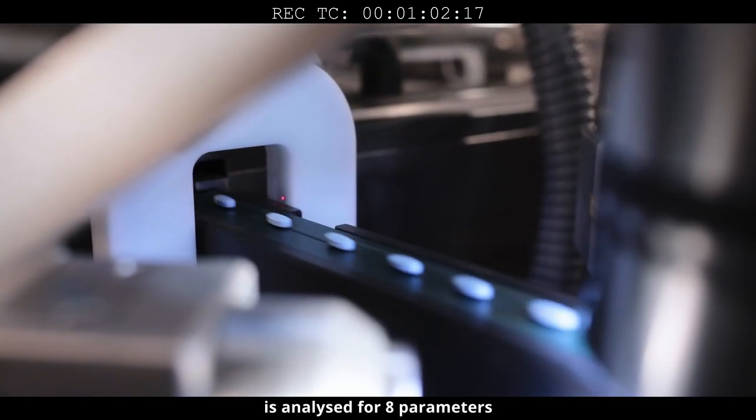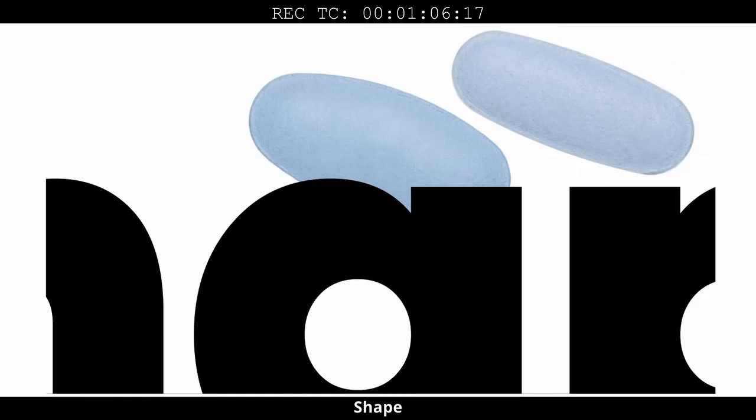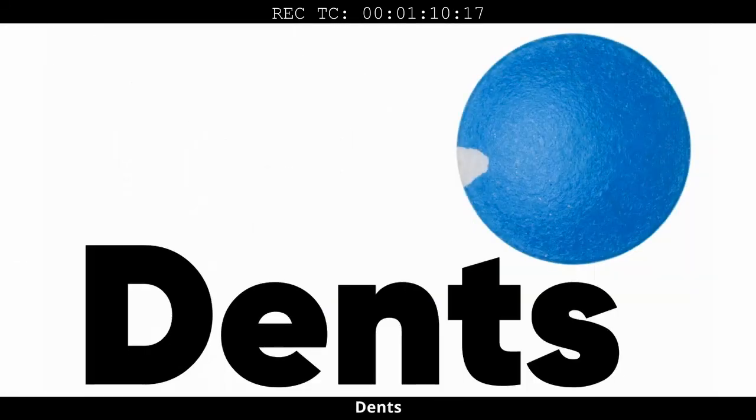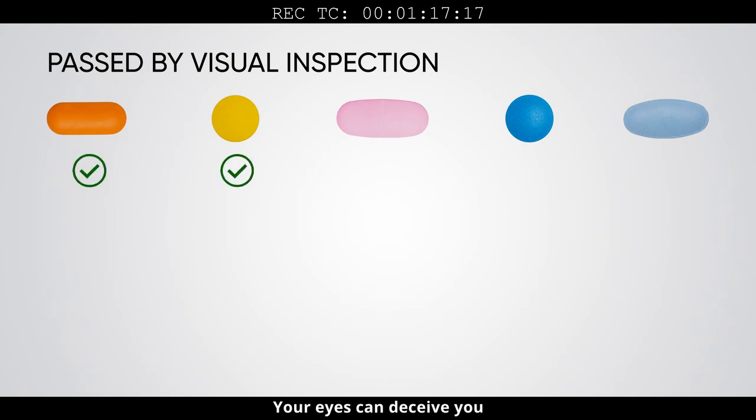Eight parameters are checked: size, shape, chipping, cracks, dense dirt, black spots, and rough surface. Your eyes can deceive you, but Netra VS6 won't.